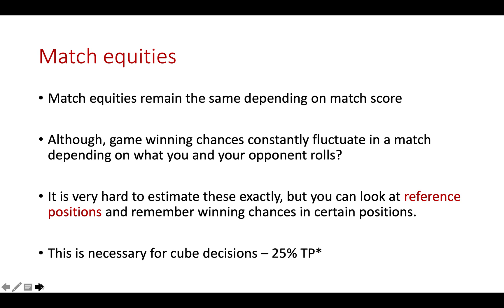After the first roll, that changes who has the advantage, who is most likely to win. If I started the game with the best opening roll — a 3-1 — XG tells us that my game winning chances have risen from 50 to 60 percent, if I make the bar point with a 3-1. That's a 10 percent increase from the best move. If I made the four point with an opening 4-2, my game winning chances would rise by 9 percent, up to 59 — not quite as good as the best move, but still a 9 percent increase.